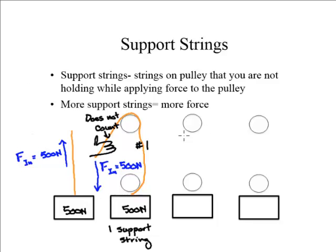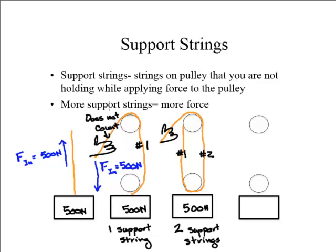Let's say that if I changed up the situation a little bit, and I started here, and I went down one wheel and then back up and over this one again, back to my hand. This is 500 Newtons again. In this case, I have one support string here and one support string here. This one does not count, and I have two support strings. What's cool is this allows me to multiply my force. I no longer have to put force in of 500 Newtons. Now, I can apply 250 Newtons, a smaller force.